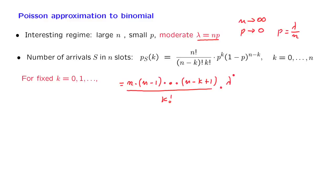Now p is equal to lambda over n. So this term becomes lambda to the k divided by n to the k. And similarly for the last term, we have 1 minus lambda over n to the power n minus k.